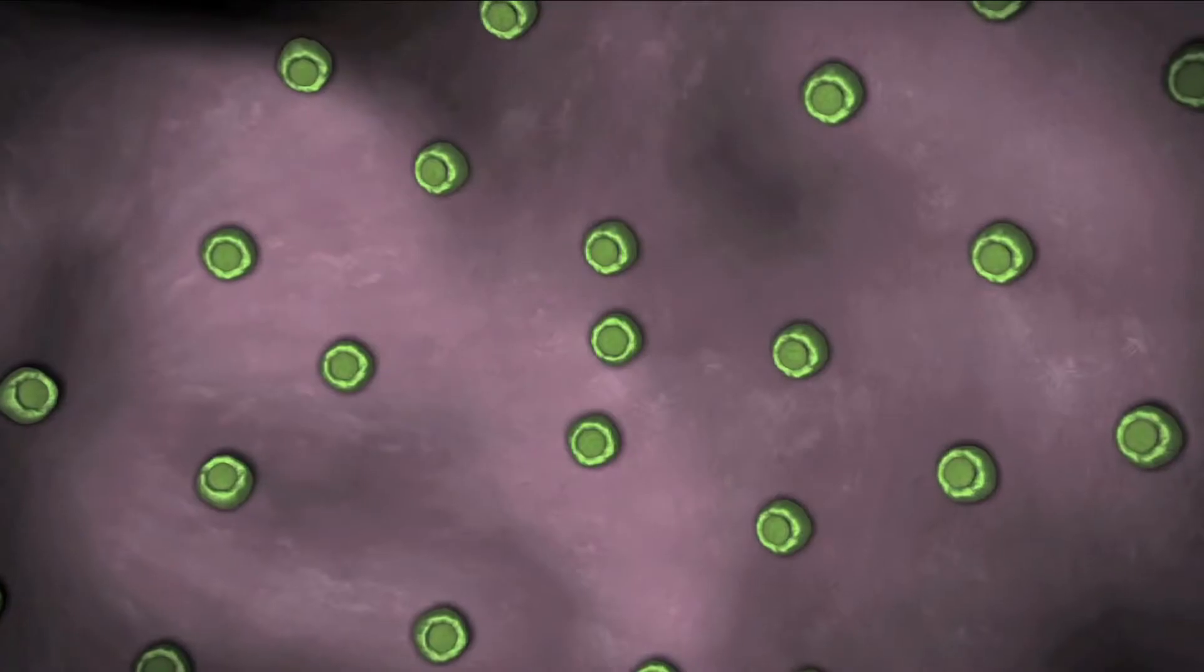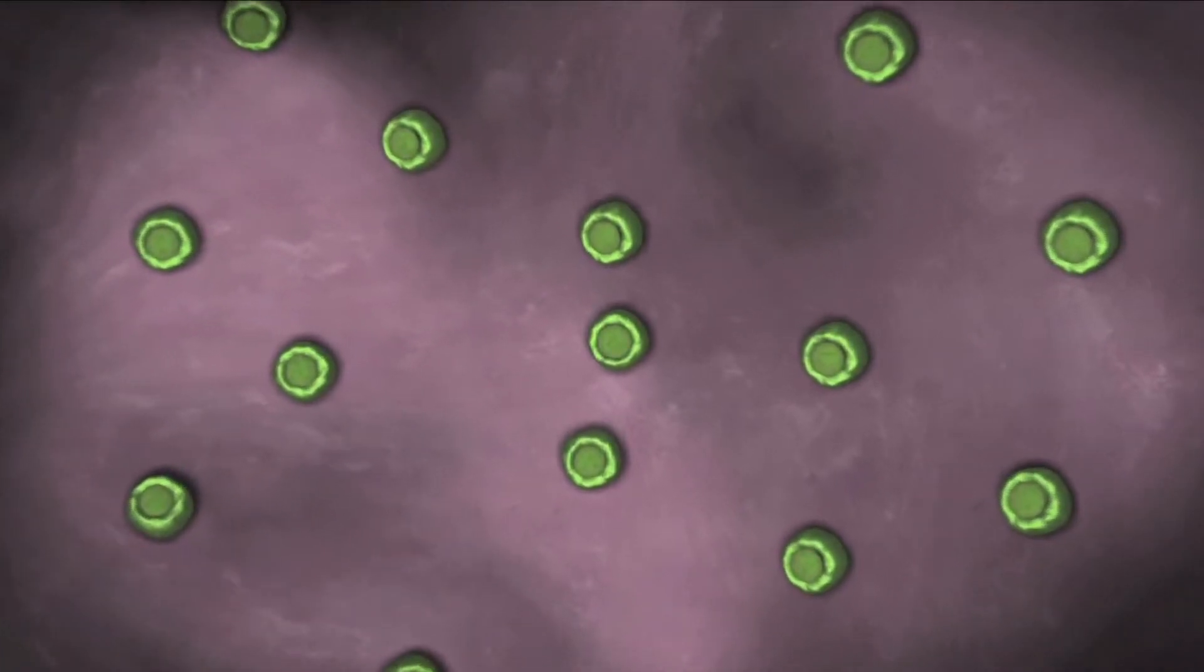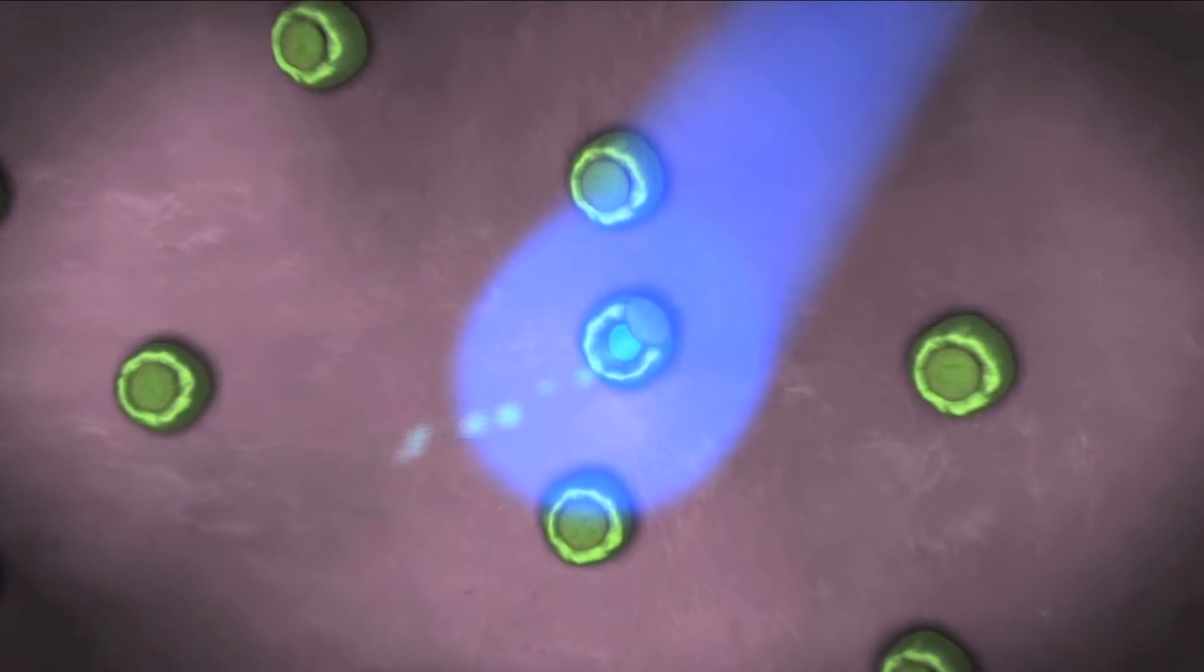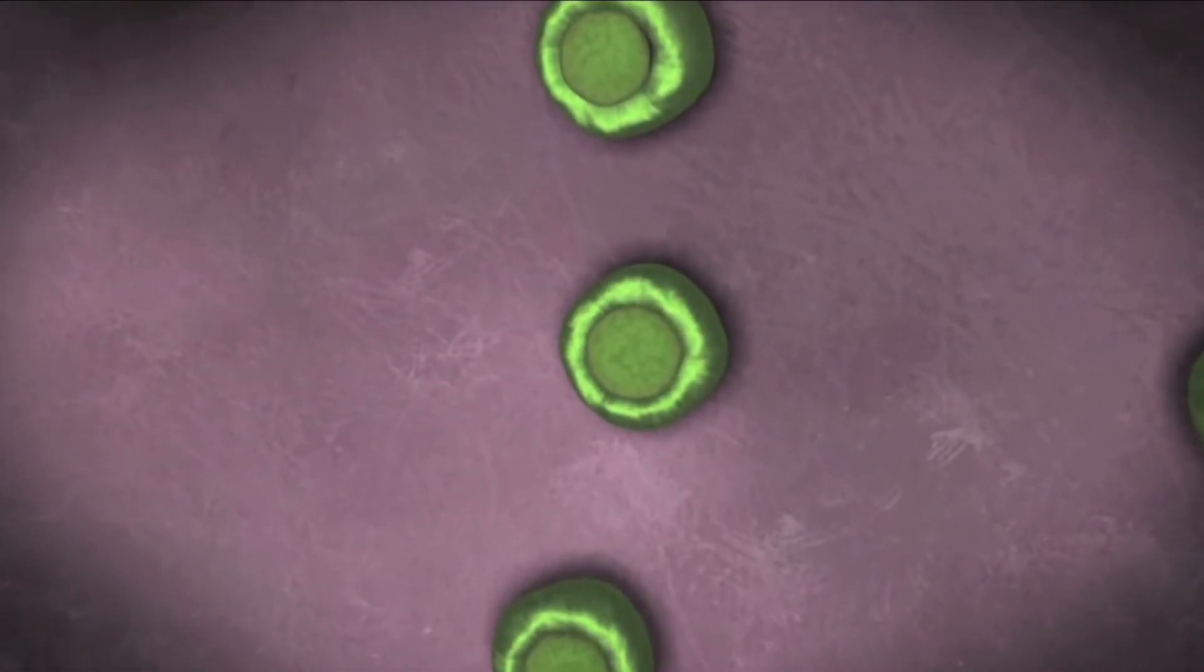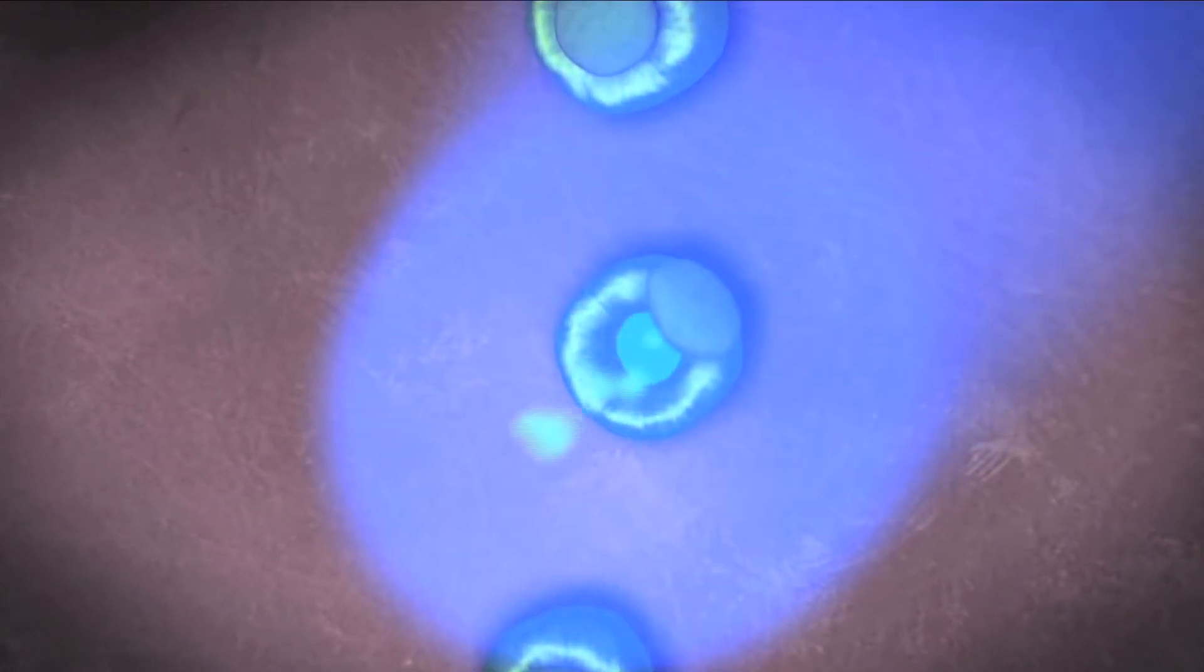The eyespot contains a light-sensitive protein called channelrhodopsin, which responds to blue light by moving positively charged ions across the eyespot membrane, causing the voltage to change - a bit like a battery being charged by a solar cell.